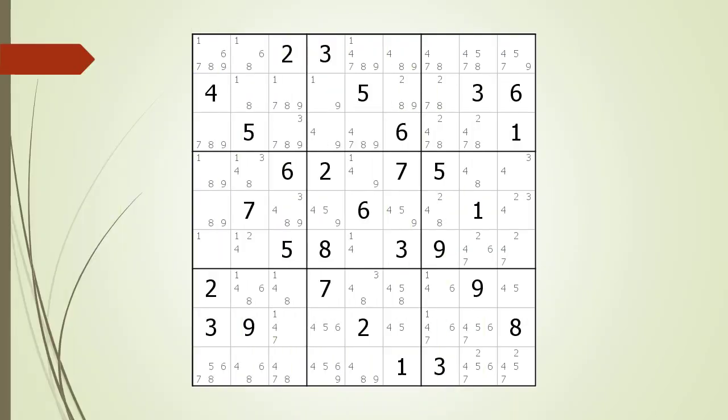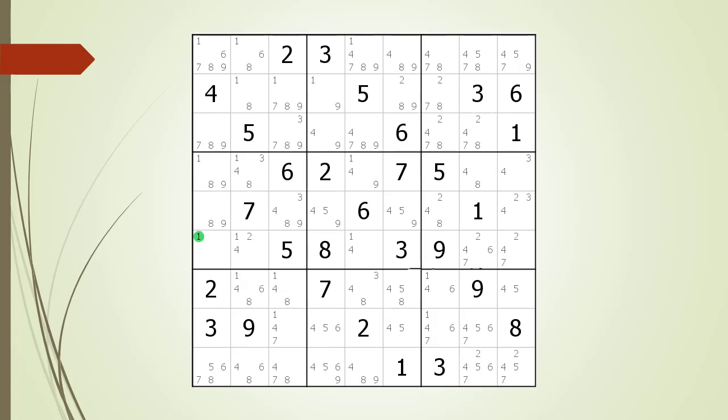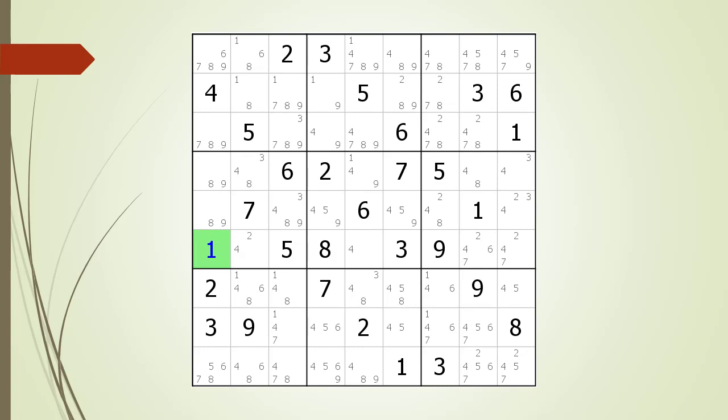Next, consider the following Sudoku in progress. Again, we start scanning each row looking for a cell having only one remaining possible candidate. When we get to row six, we discover column one only has one remaining possible candidate. We choose the one remaining candidate as the value of the cell.